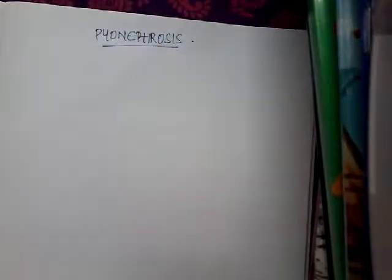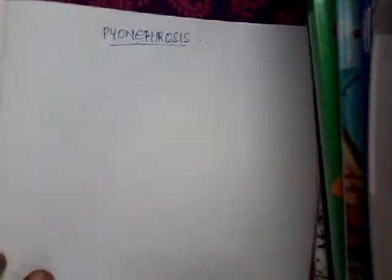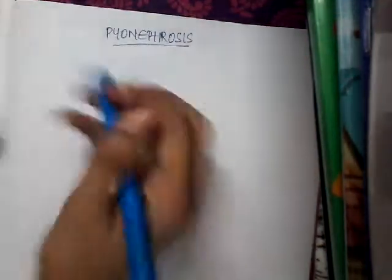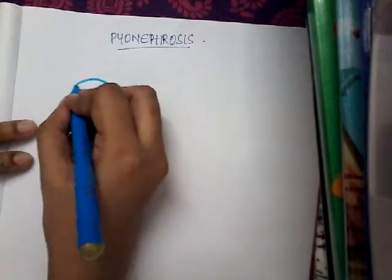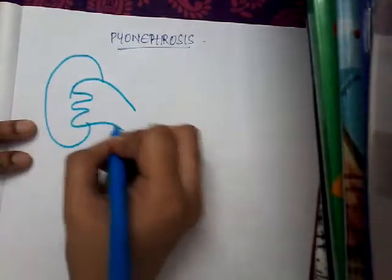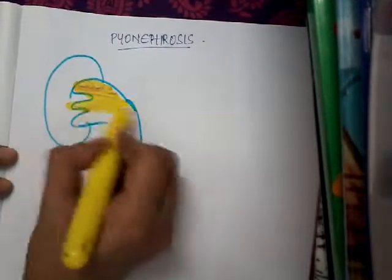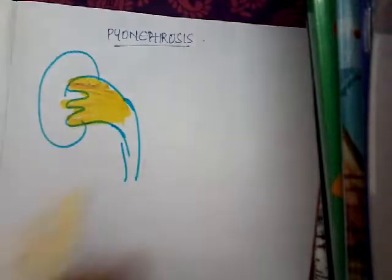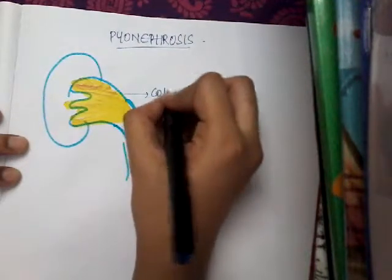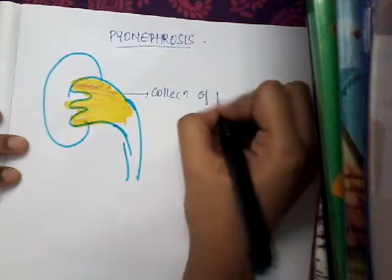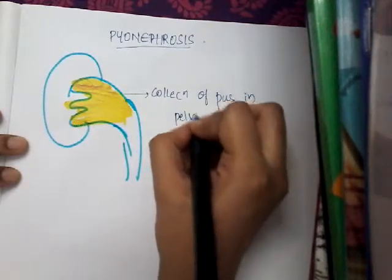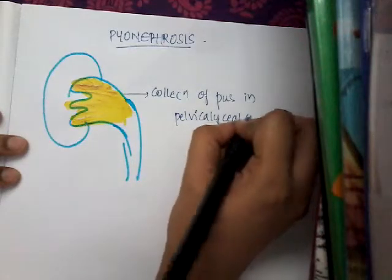Hello friends, let us learn about a new topic today — pyonephrosis. So what is pyonephrosis? Pyonephrosis is collection of pus in the pelvic caliceal system. This is the kidney. Whenever there is collection of pus in the pelvic caliceal system, that is called pyonephrosis.